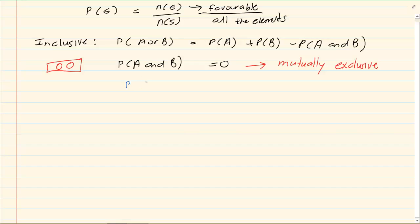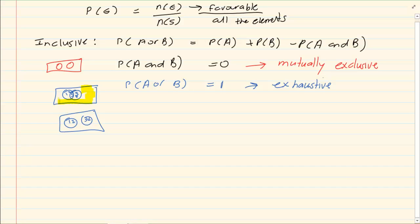Then we have where P of A or B is equal to 1. Now this is called exhaustive. This does not mean that they have to touch. I can have an event where they are overlapping and I can have an event where they do not overlap, but all the elements are in the blocks. There is no element outside of the event. So exhaustive, it can be inclusive or exclusive.